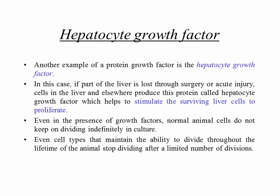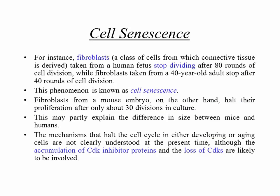Even in the presence of growth factors, normal animal cells do not keep dividing indefinitely in culture. Cell types which maintain the ability to divide throughout the lifetime of the animal still stop dividing after a limited number of divisions. For example, fibroblasts from a human fetus stop dividing after 80 rounds, while fibroblasts from a 40-year-old adult stop after 40 rounds. Fibroblasts from a mouse embryo halt after only about 30 divisions — which may partly explain why mice are so small compared to us. This phenomenon is known as cell senescence.